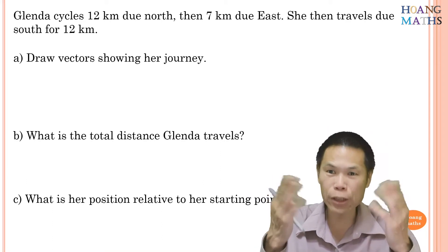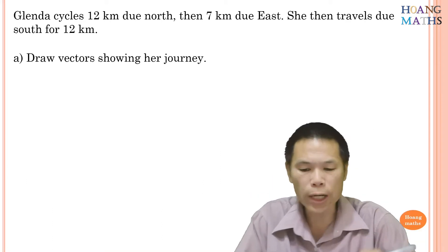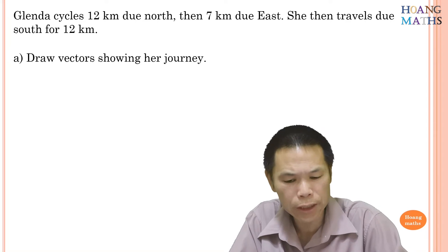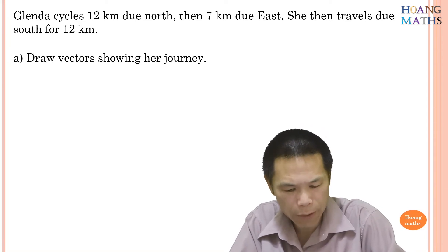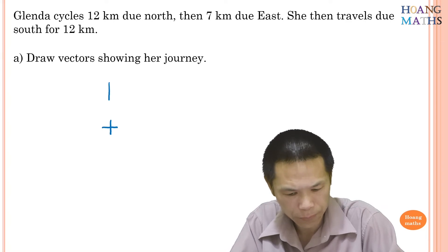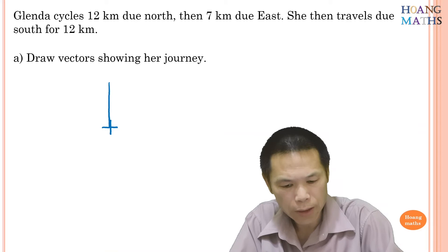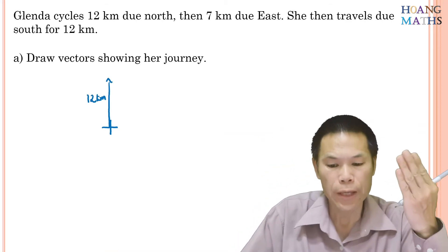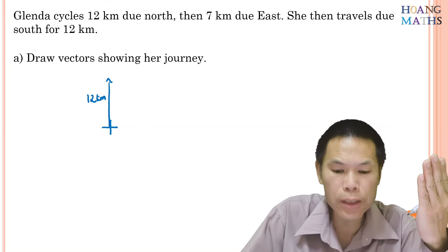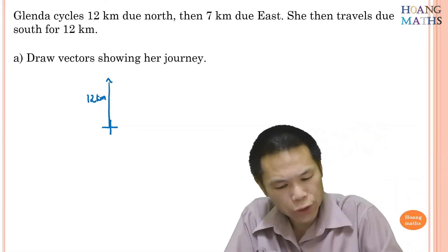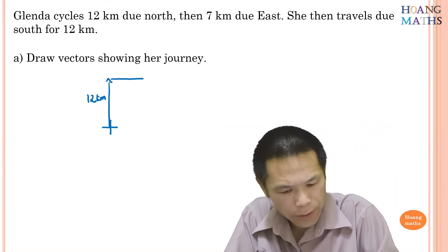So let's get into this. Glenda cycles 12 kilometers due north. So we start down here. We're going up north for 12 kilometers. And then 7 kilometers to east, so she goes east for 7 kilometers.